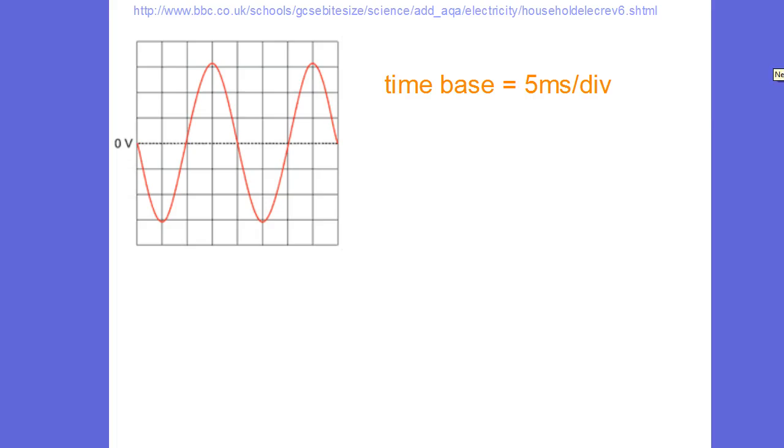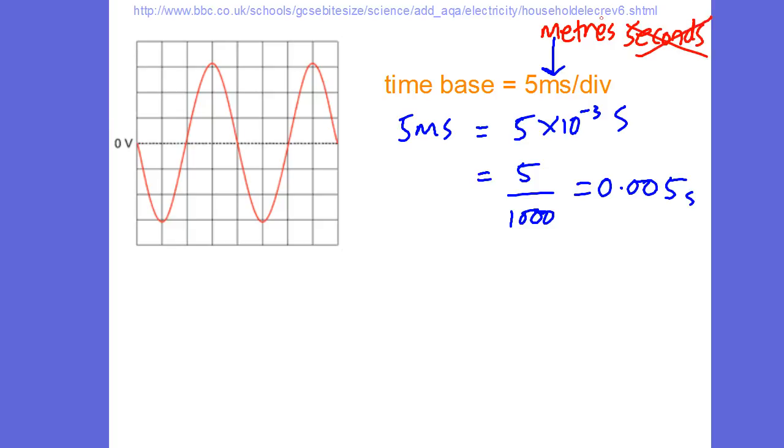So let's have a look. Here's an example stolen from another website. Hopefully there's another link floating on the screen. And we're told the time base is 5 milliseconds. Often the time base on these waves will be in milliseconds. So you've got to make sure you're happy with milliseconds. Remember, 5 milliseconds is the same as 5 × 10⁻³ seconds or 5 thousandths of a second or 0.005 seconds. So often the scale on this is less than a second.